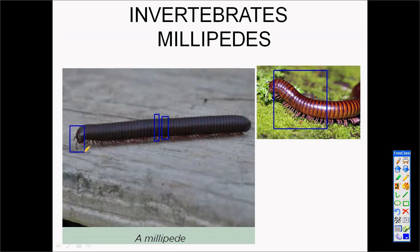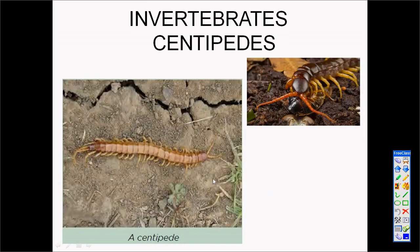Centipedes are also known as carnivores. They are carnivores that eat other insects. They have flat segments on their body and they have two legs on each segment.